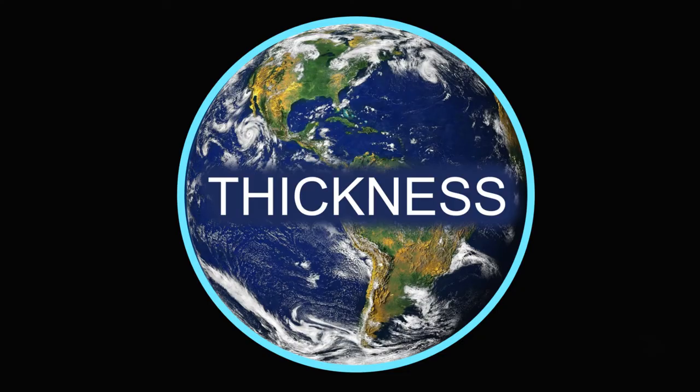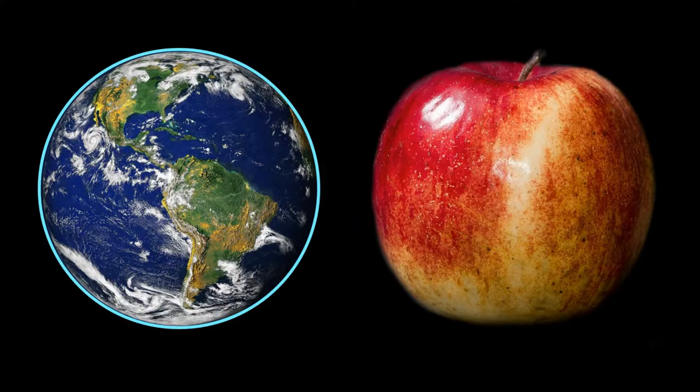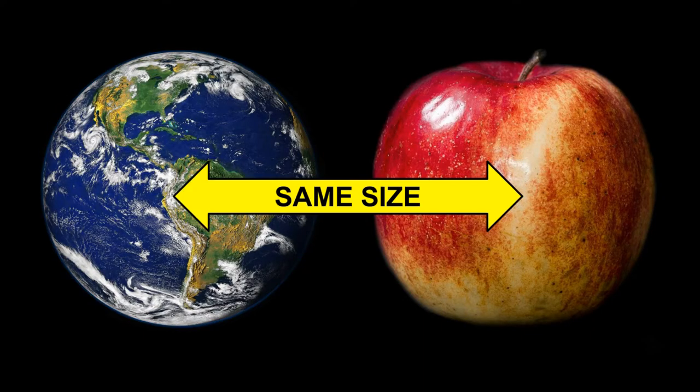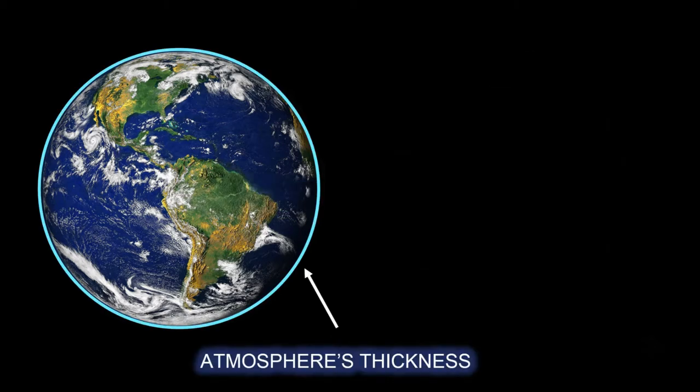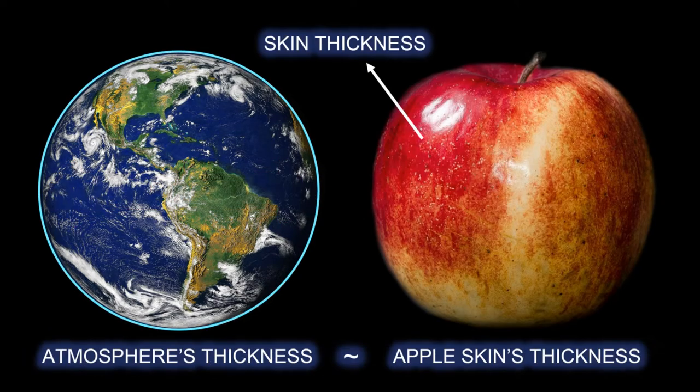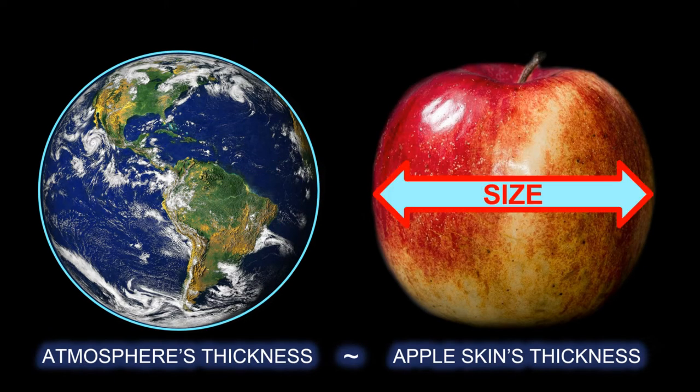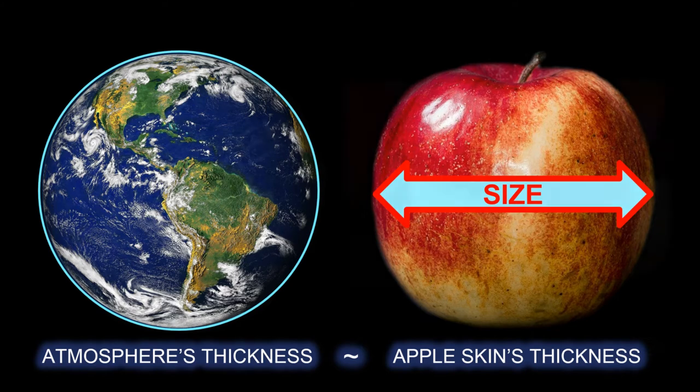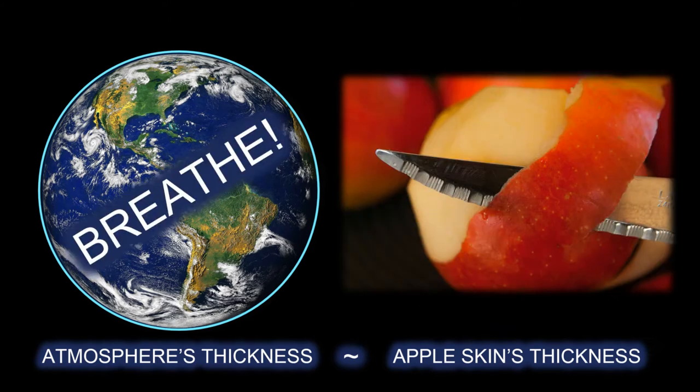Fact number one, atmosphere's thickness. If you take an apple and hypothetically say it's the same size as the Earth, if you look at the atmosphere's thickness and compare it to the size of the entire Earth, that ratio is equivalent to the apple's skin thickness compared to the size of the apple. Yes, that thin. And because of this delicate and thin layer, we're able to breathe on our planet.